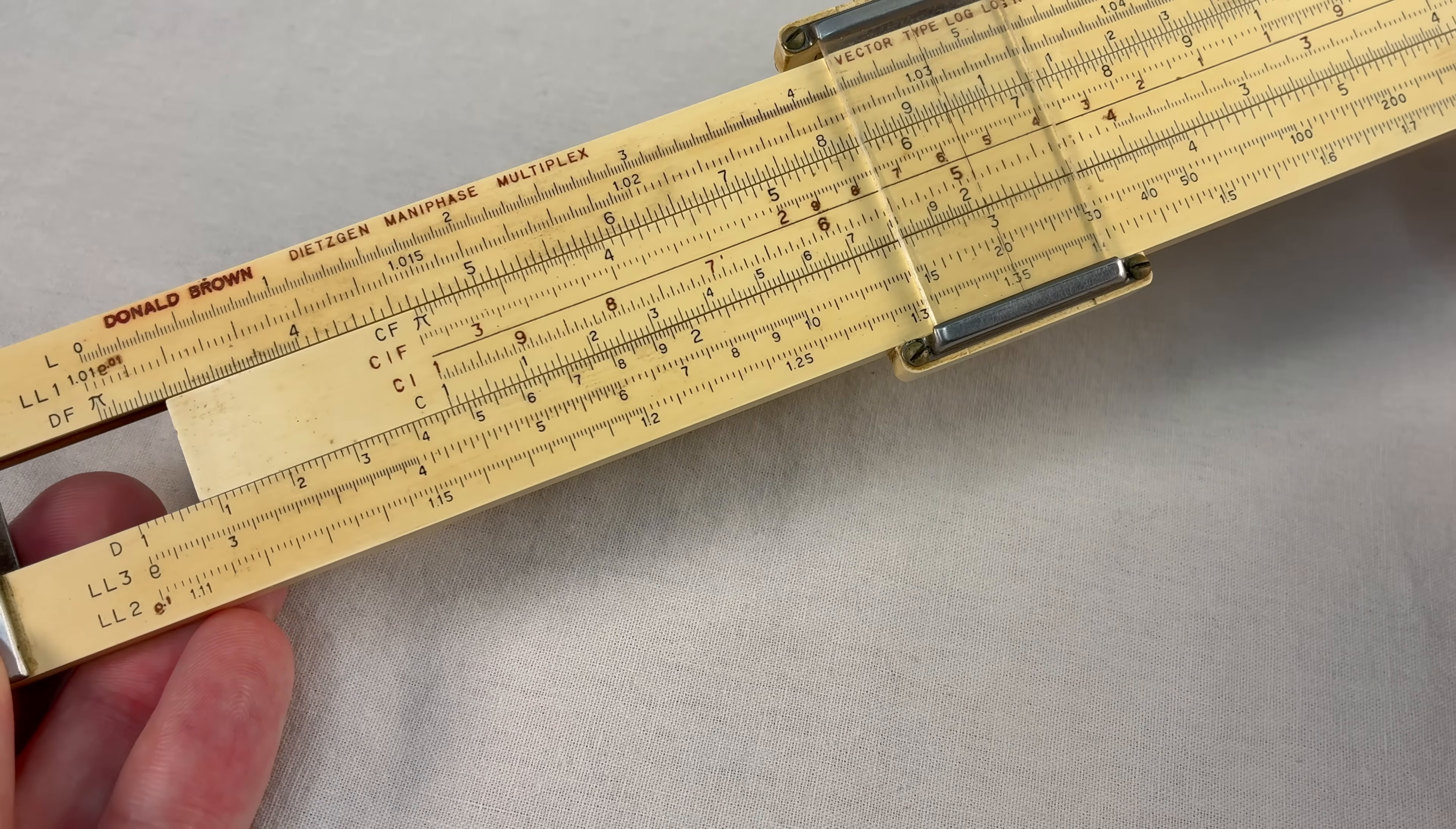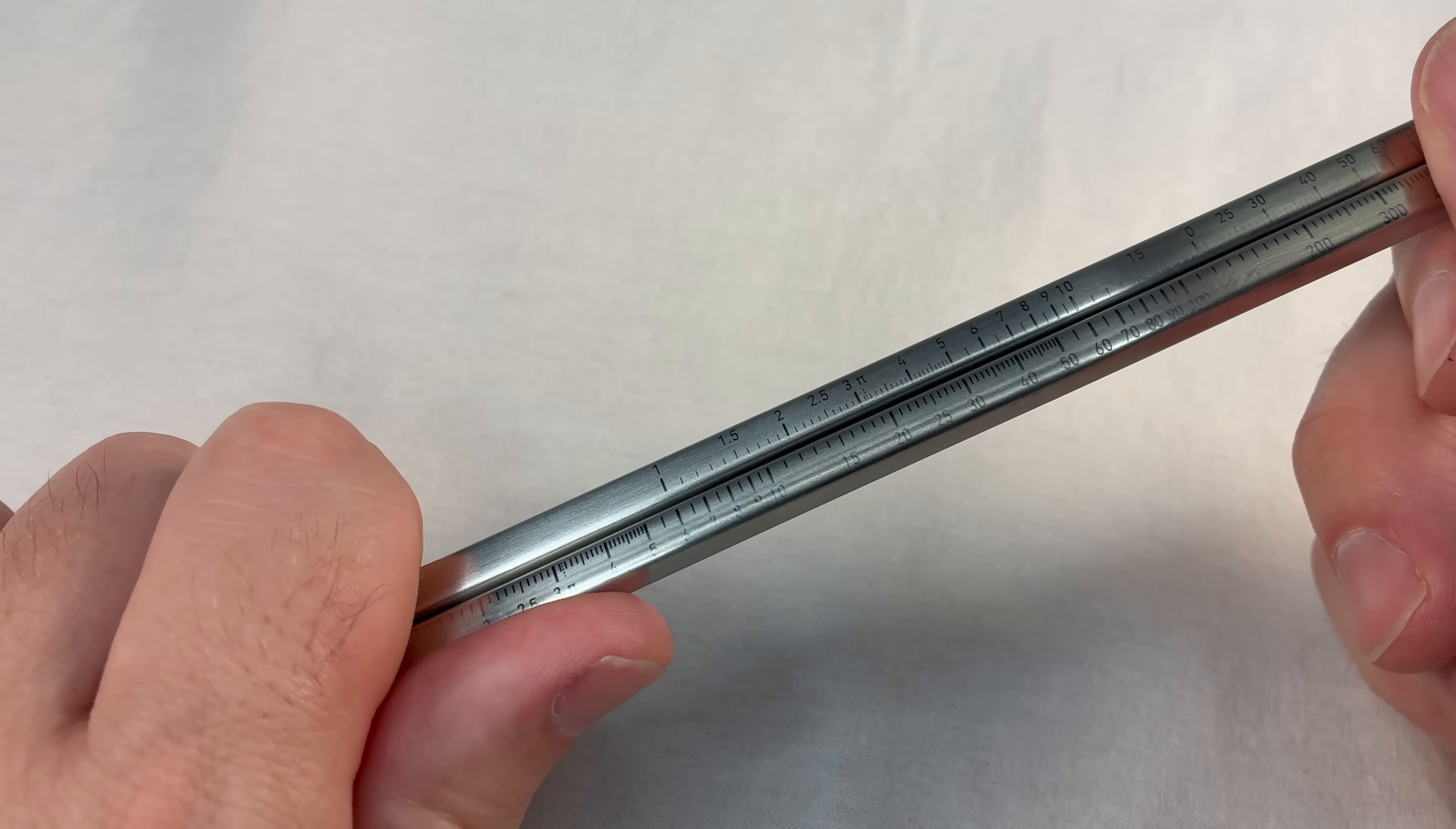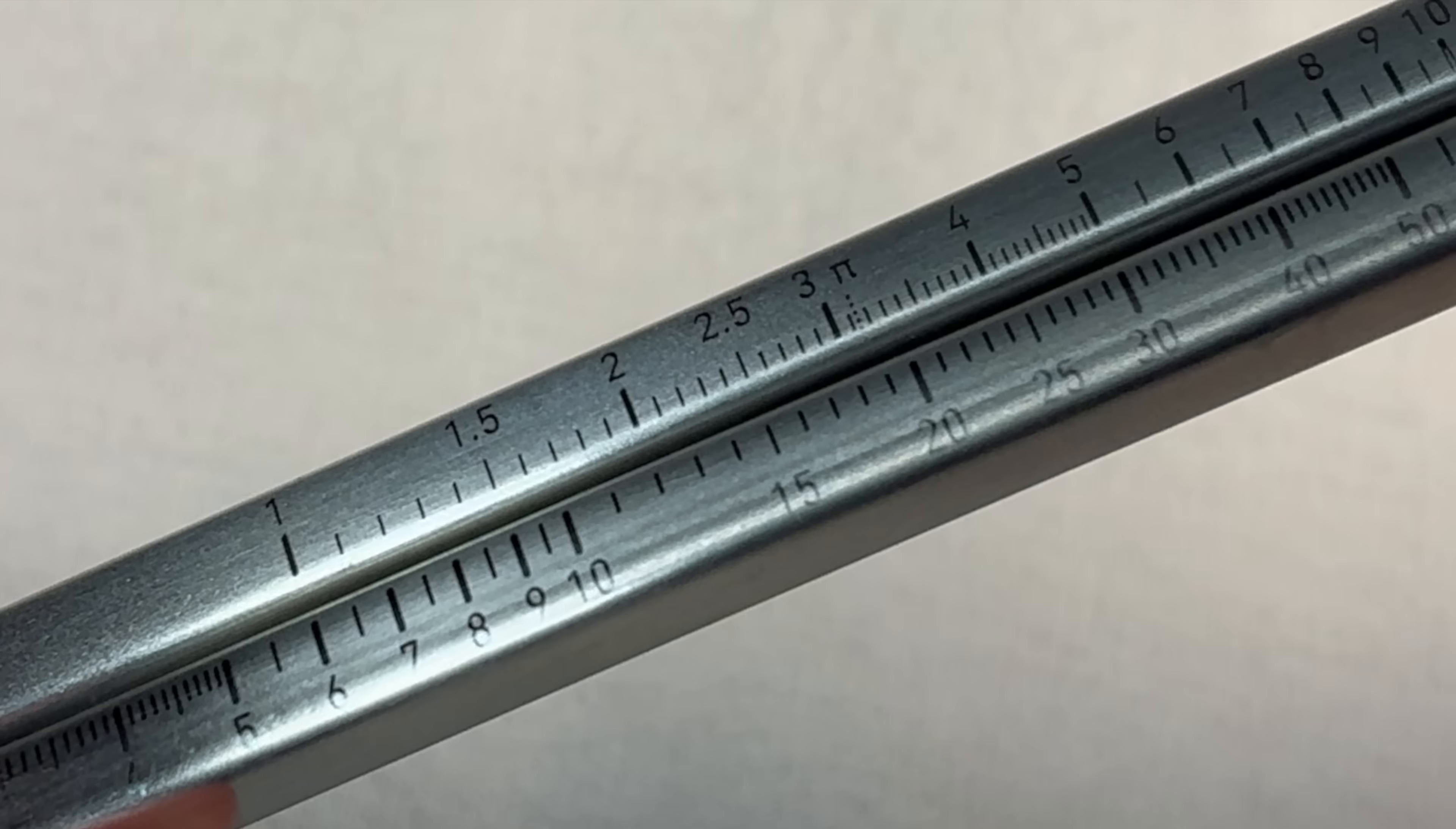But you don't really have to understand any of that, just remember how to slide the thing. If you line up one on top with something else, like a six on the bottom, then because of how the scales work, every number on the bottom is now six times the number on the top. See, the two lines up with the 12, the three with the 18. And that's how you multiply.